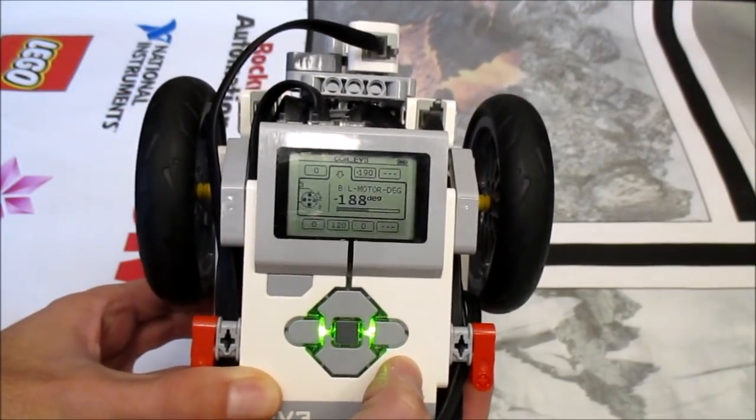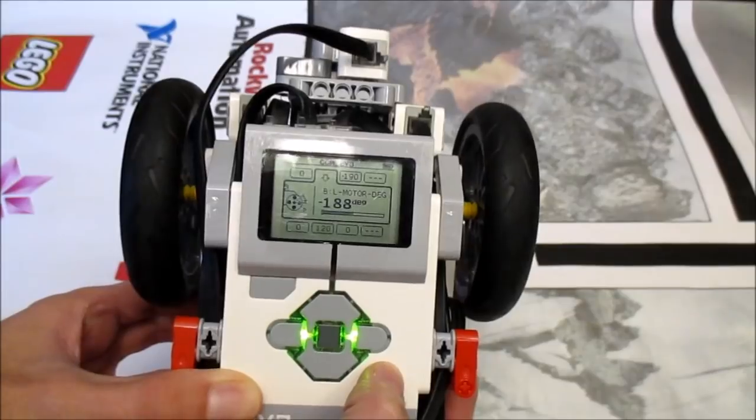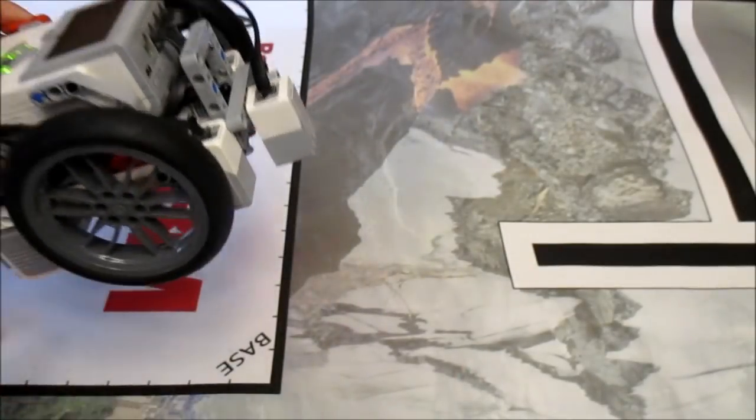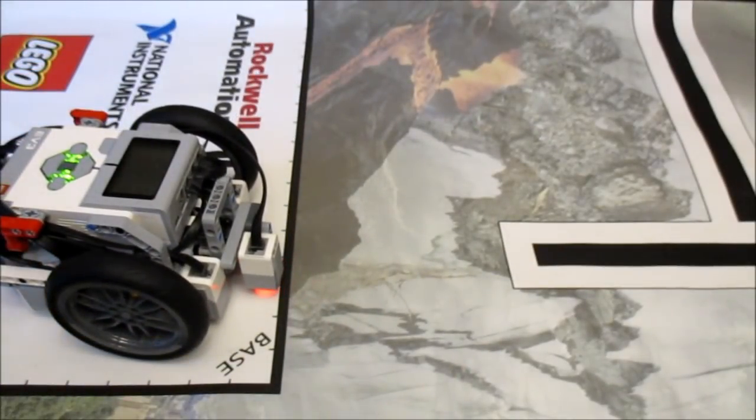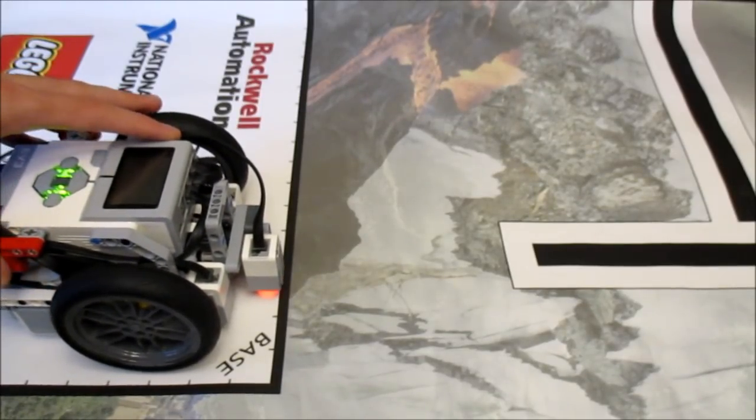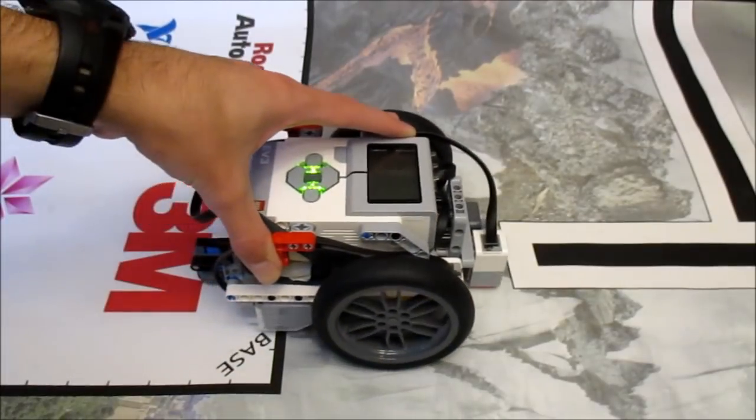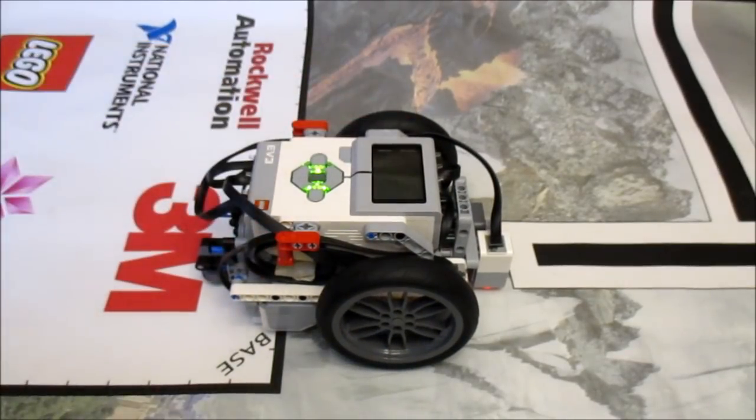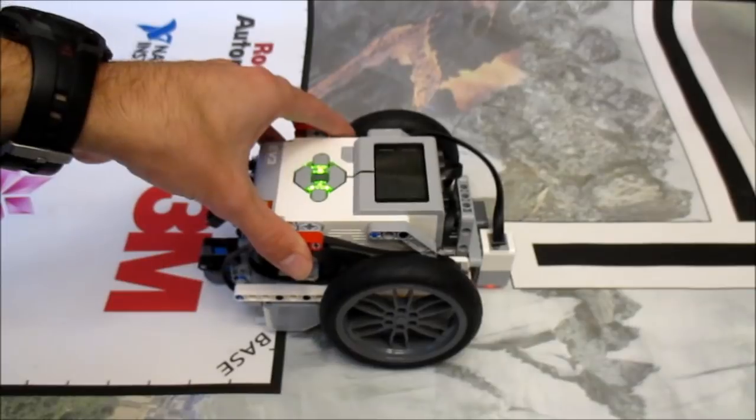As you see, we've measured a degree value here. It's about 188 degrees on my robot, but your mileage may vary depending on your specific robot. Now the reason why we just measured this distance is because when we go to program the robot, we're going to program the robot to drive forward that amount of degrees and then stop.